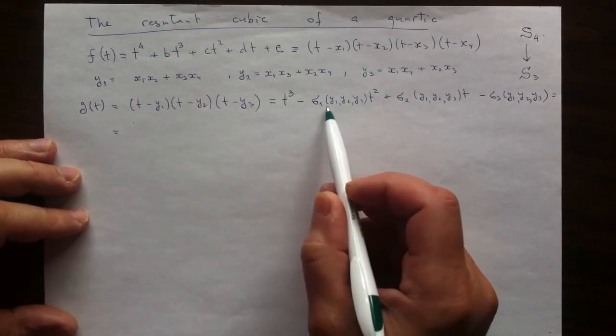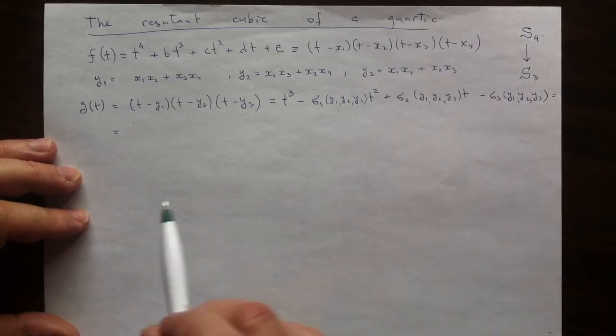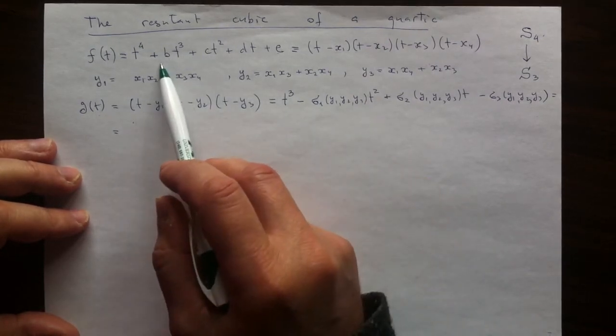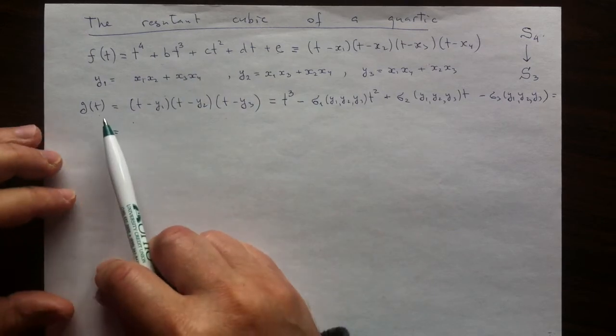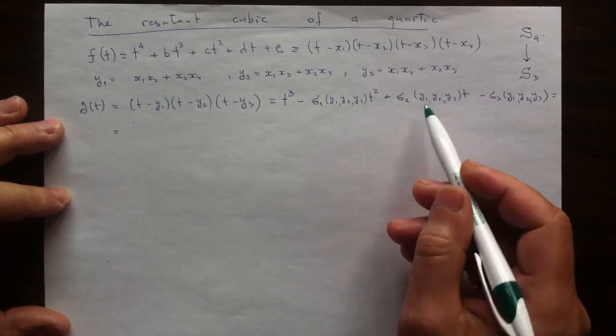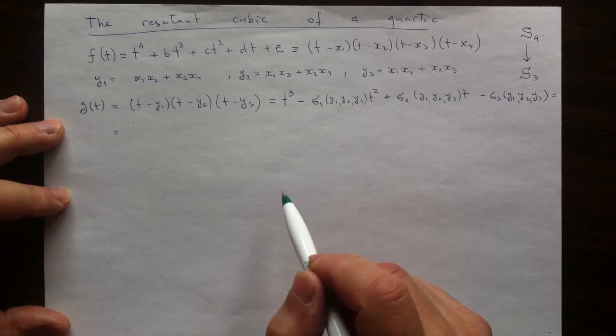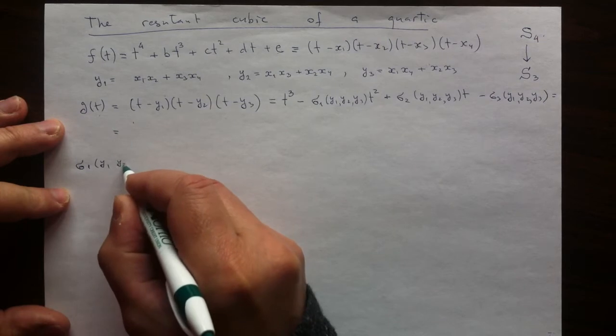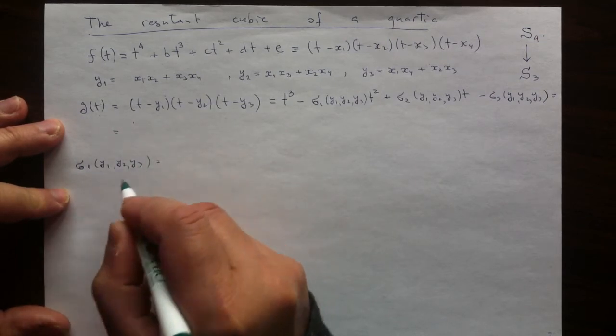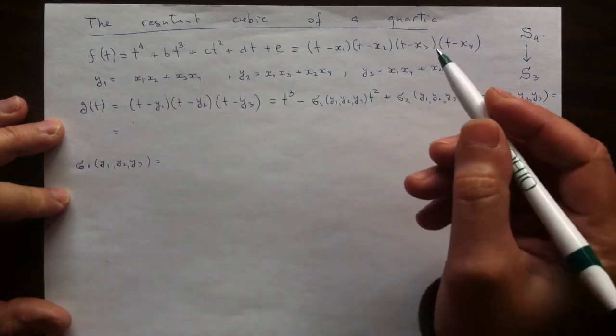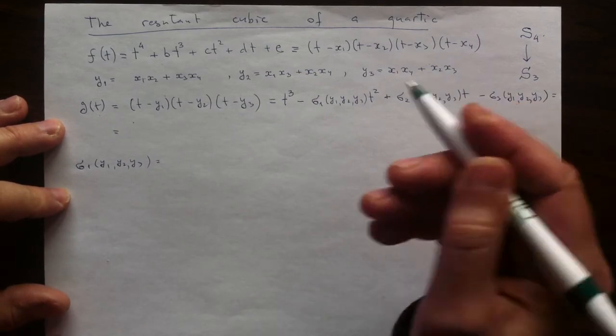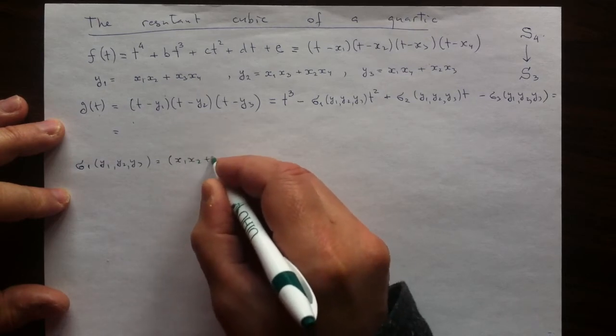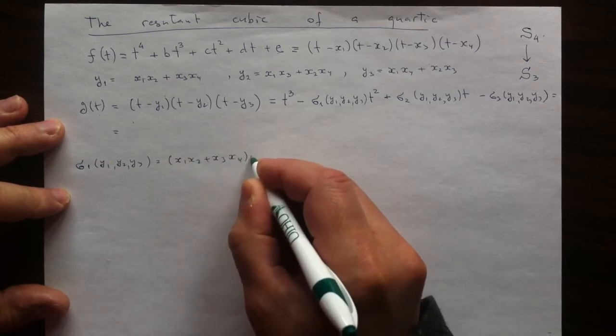All I need to do now is to find these elementary symmetric functions of my new three variables in terms of elementary symmetric functions of my original four variables. That will give me the answers for the coefficients. I will start with σ1, which is just the sum of my y's.